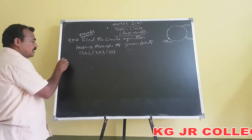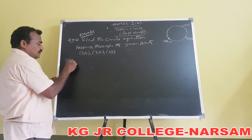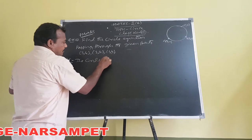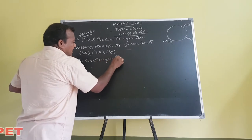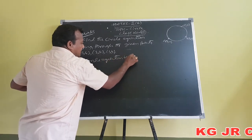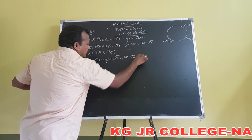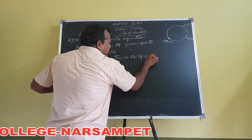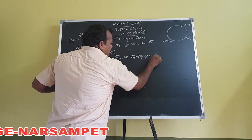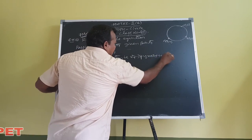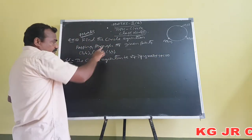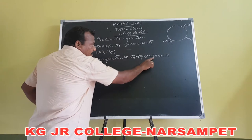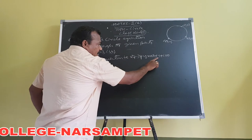So, the circle equation in the general form is x² + y² + 2gx + 2fy + c = 0. Now, using the given three points, we will find out the three values: g, f, and c.